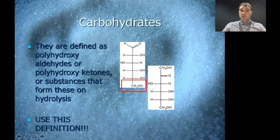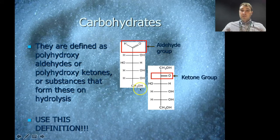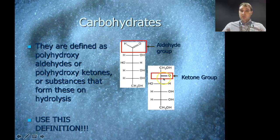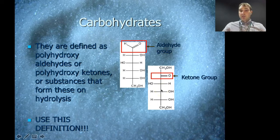Let's look at where that definition comes from. Here we have a substance that has an aldehyde group at the end — C double bond O, followed by H — and it's polyhydroxy because there are lots of OH groups. An OH group is called a hydroxy or hydroxyl group, so this is a polyhydroxy aldehyde. This other one has a ketone group — a C double bond O in the middle of a chain — and it also has hydroxyl groups around it: one, two, three hydroxyl groups, so more than one, making it poly. So it's a polyhydroxy ketone.